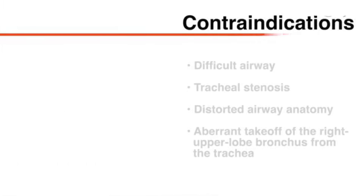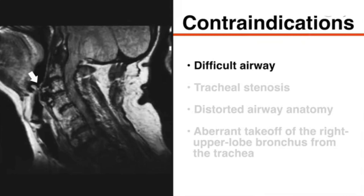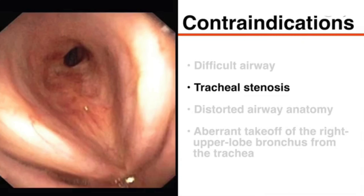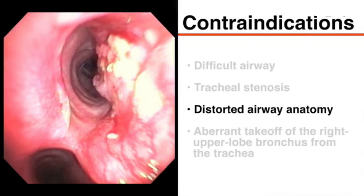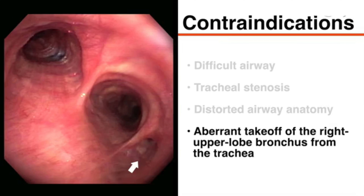Contraindications to double lumen endotracheal tube placement include a difficult airway, tracheal stenosis, and distorted airway anatomy, any of which can impede or prevent correct positioning of the tube. Additionally, aberrant takeoff of the right upper lobe bronchus from the trachea is a relative contraindication for right-sided double lumen tube placement.